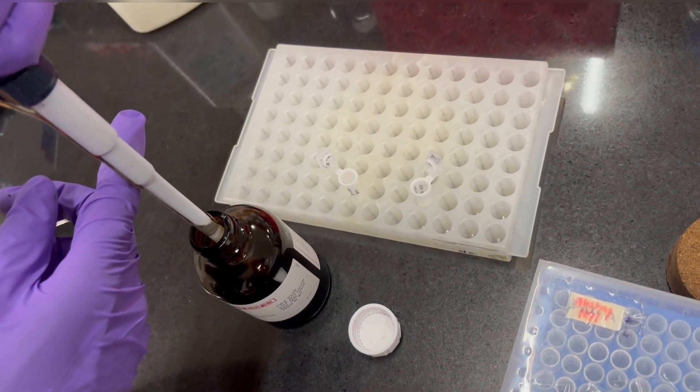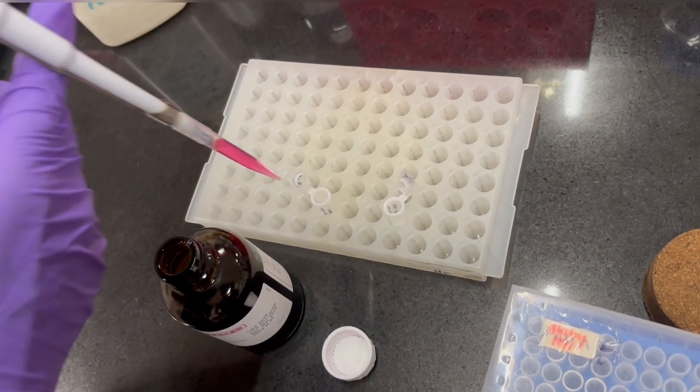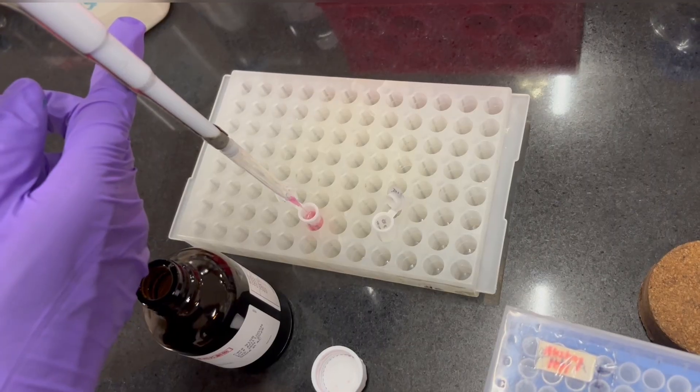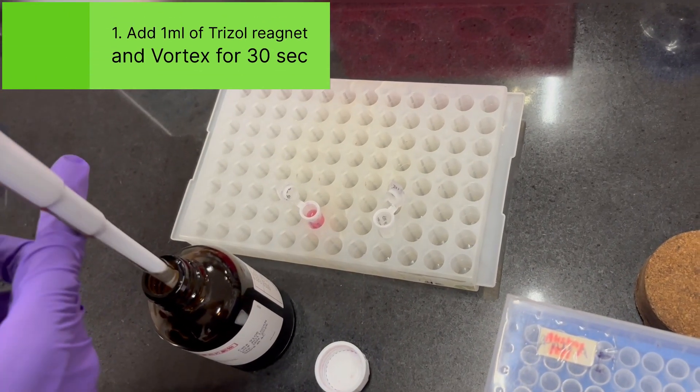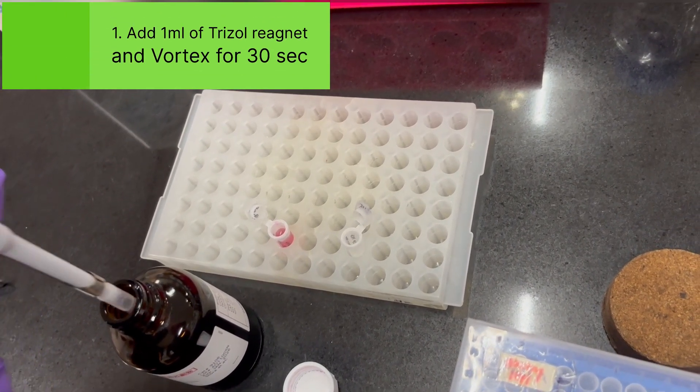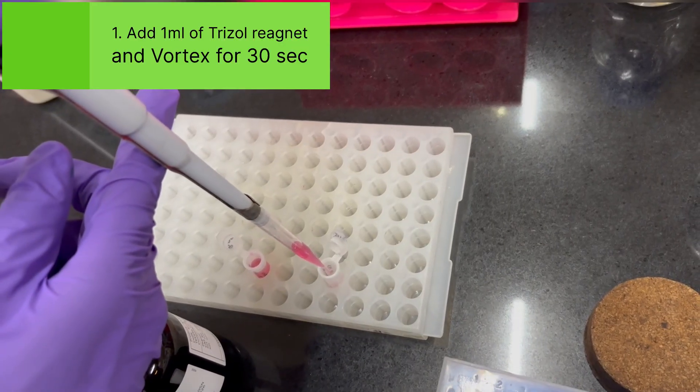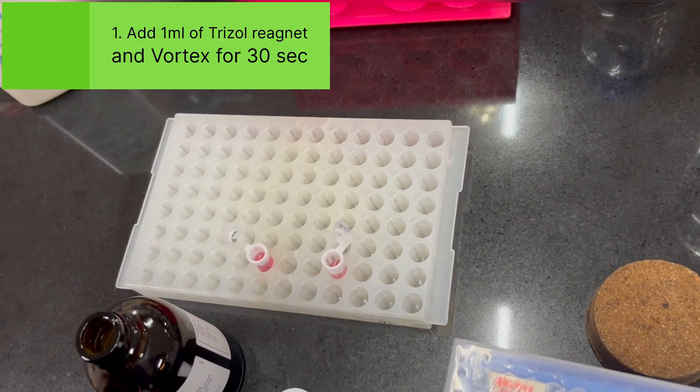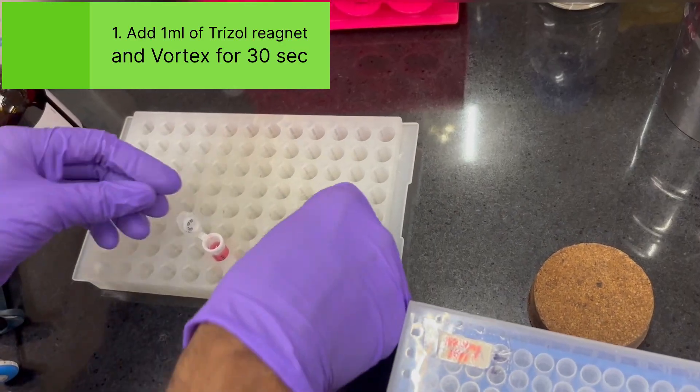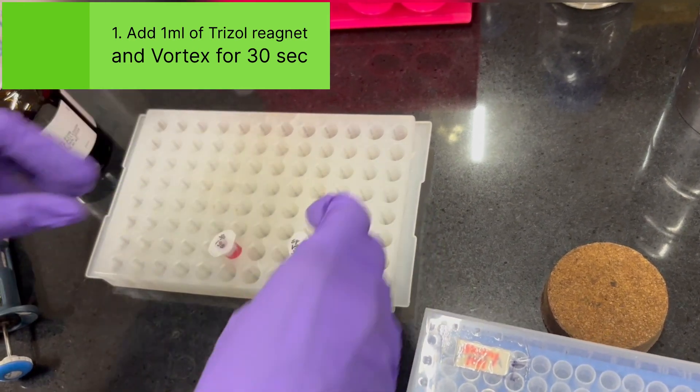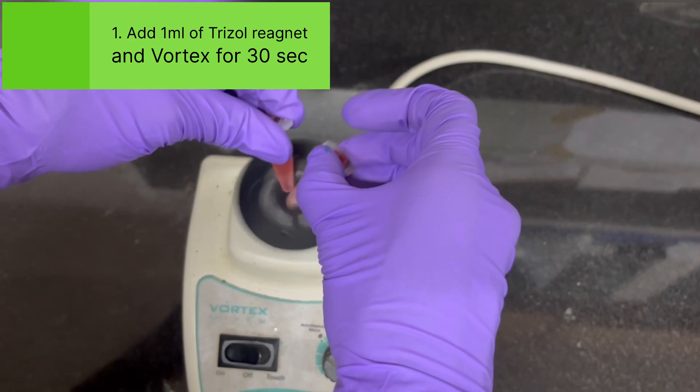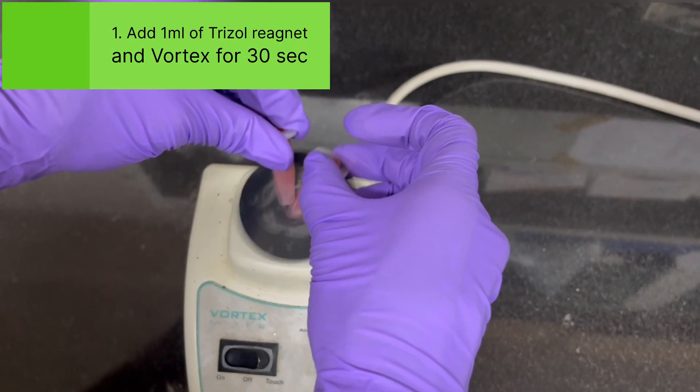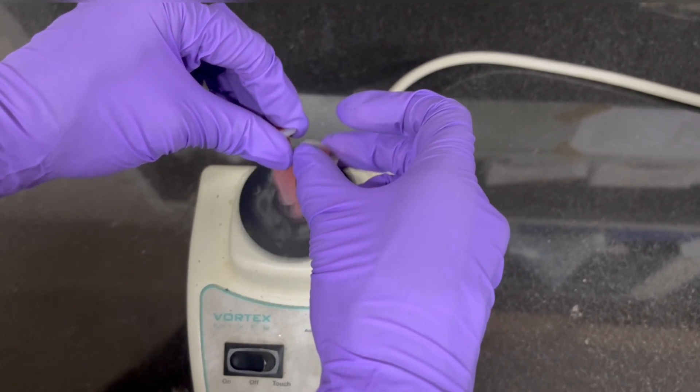Which I have explained earlier, the principle I have explained earlier. You just add 1 ml of Trizol reagent into the respective tubes. And after adding Trizol if your tissue thaws, don't worry. Here you close the tubes and then vortex it for 30 seconds in a vortexer or vortex machine you can use.